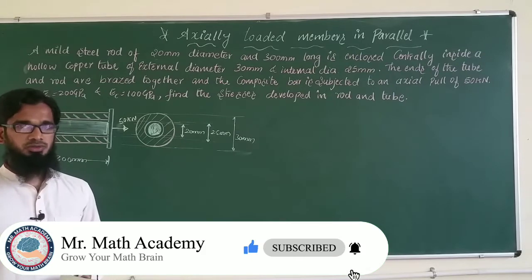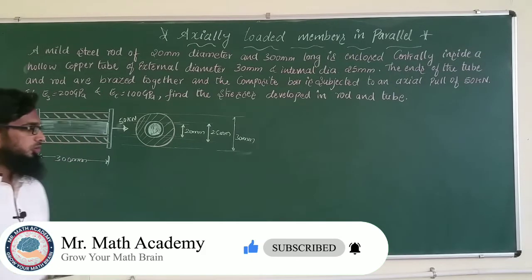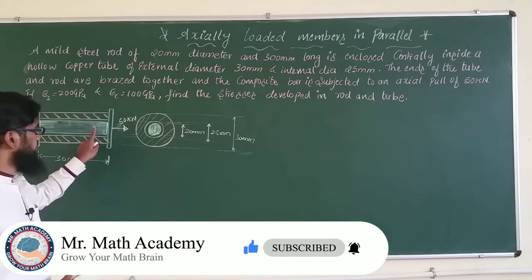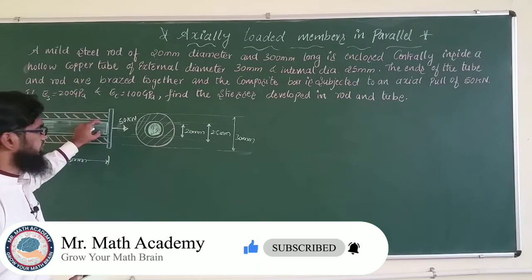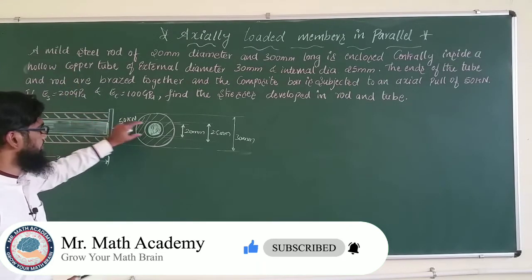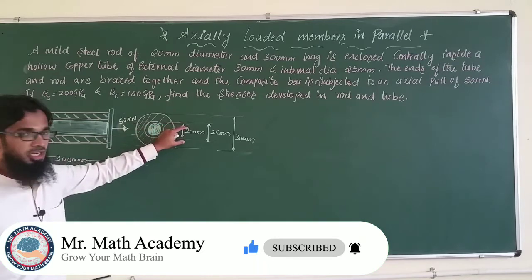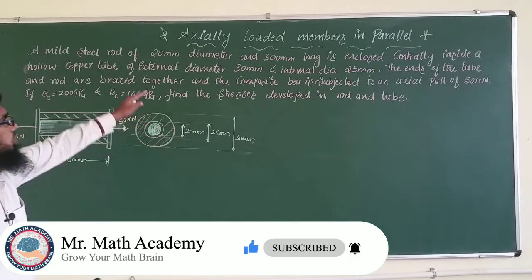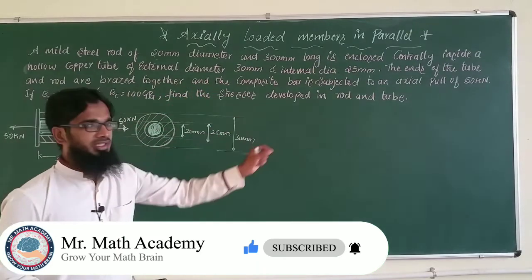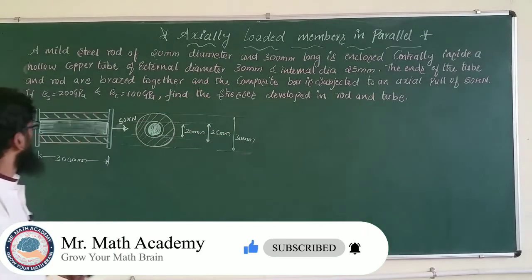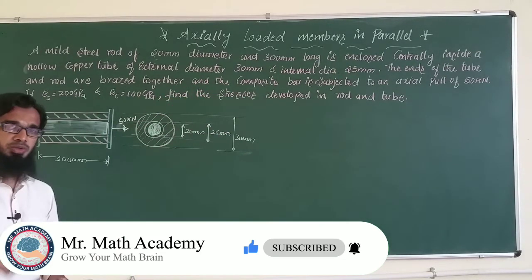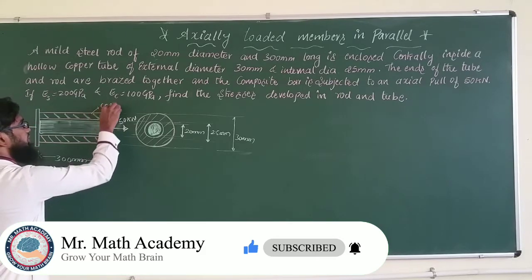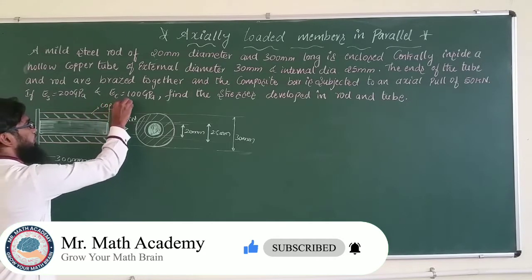Let's go directly to the numerical. What is given in this problem: there is a mild steel rod of diameter 20 mm and length 300 mm. It is enclosed centrally in a hollow copper tube — you can see this is the outside copper tube.